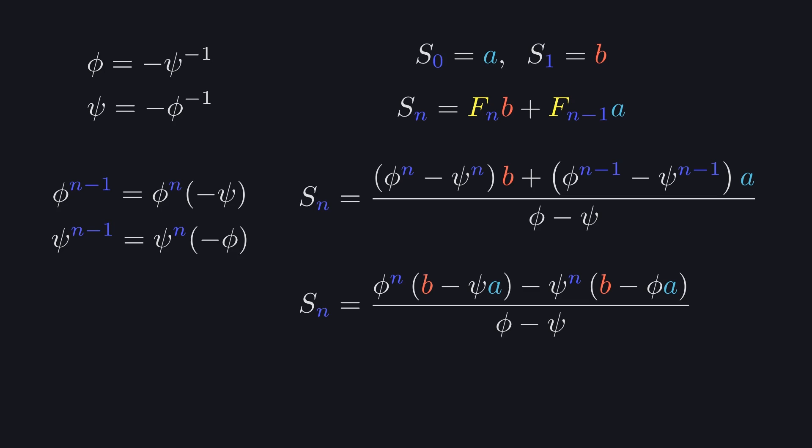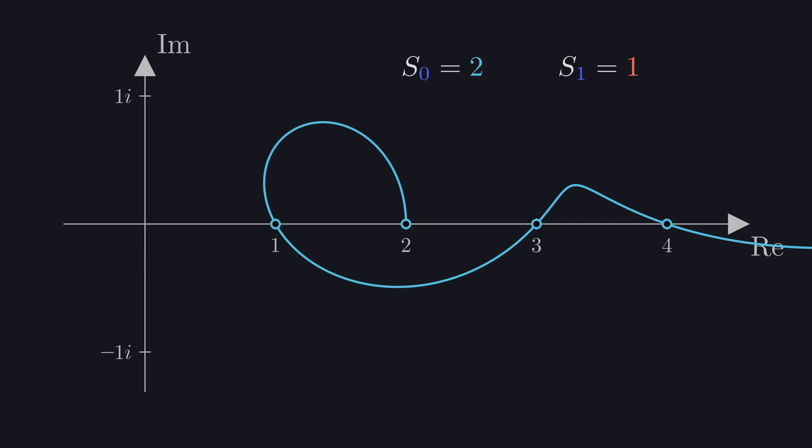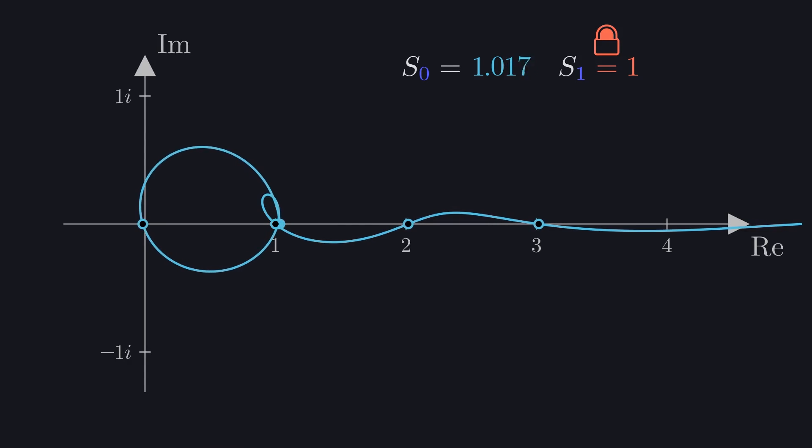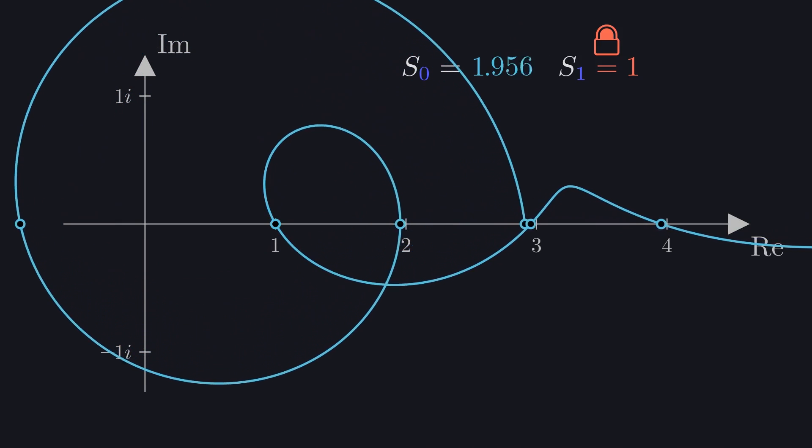And now, we can discover how the shapes of the Fibonacci and Lucas curves are related. Starting with the Lucas curve, we'll fix the second starting element, S1, at 1, and begin decreasing the first element. As we hit 1, the kink gets sort of ironed out, and the first two 1's form a loop, because this is the Fibonacci curve shifted by one element. Let's expand it on the left, and bring it back to Lucas to see a fuller picture of this transformation. And again.